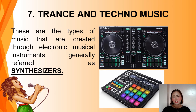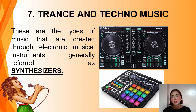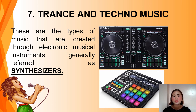The next genres of music are trance and techno. These are types of music created through electronic musical instruments, generally referred to as synthesizers. Both are known as fusion or electronic dance music. They are generally produced for playback by disc jockeys or DJs, who create seamless selections of tracks called mixes.